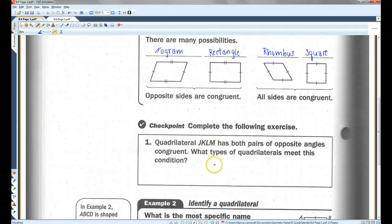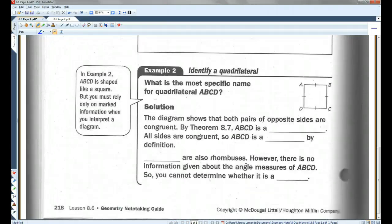All right, I'll let you guys do the checkpoint. Let's go on to example two. What is the most specific name for quadrilateral ABCD? Okay, at first glance, this looks like a square.